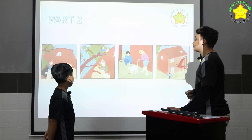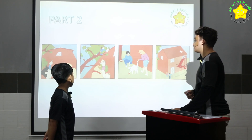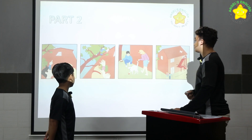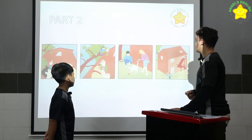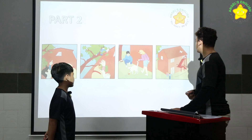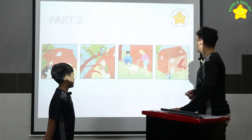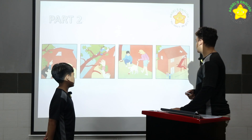In picture two, the boy is climbing the tree to help the cat. The girl is screaming. In picture three, the boy and the girl are playing with the cat. Then the cat is going on the top of the house again. The children are not happy.